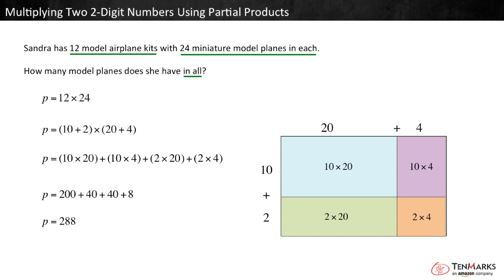So, 12 times 24 equals 288. Connect it back to the word problem. In 12 kits of 24 planes each, Sandra has 288 planes in all.